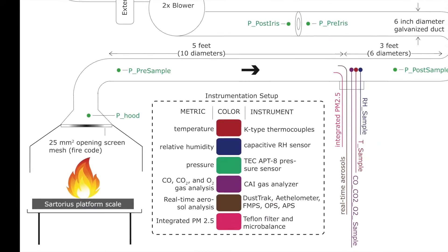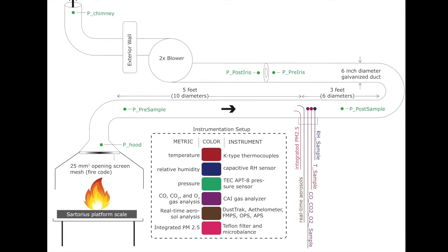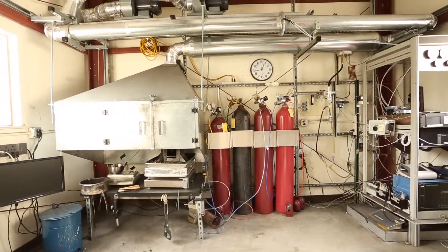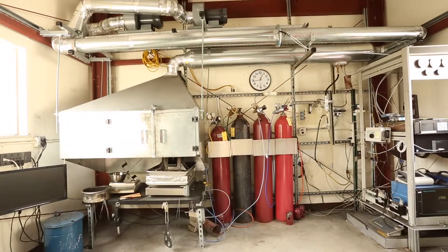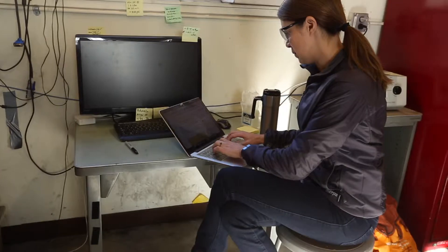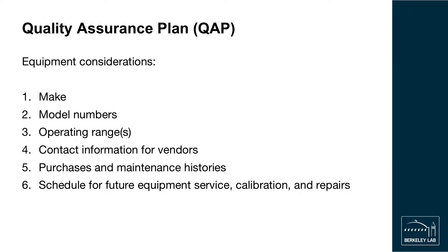When describing the design of your laboratory, include a detailed schematic of the laboratory that contains diagrams of the hood, duct, sampling port, flow monitoring device, and blowers. Any calculations that were performed in the process of designing the laboratory should be written and clearly justified in the quality assurance plan. In fact, any design considerations or calculations described previously in other videos of this training course should be determined for your own testing laboratory and then documented in your quality assurance plan.